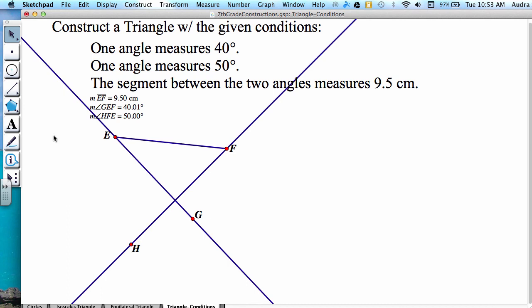Now that we have our original segment length, which is EF at 9.5, and the two angle measurements that satisfy the conditions, we can now complete our triangle by connecting the point of intersection with point F and also with point E to get our new triangle.